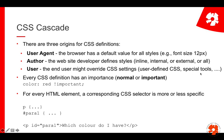This order is exactly top-down. If the end user defines something, it's the most important. So if you as a website designer say the font size is 16 pixels, but the end user says 32, then it will be 32. The author is more important than the browser default. So that's the general order.